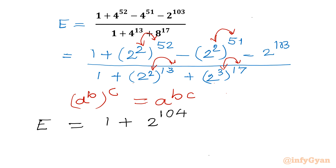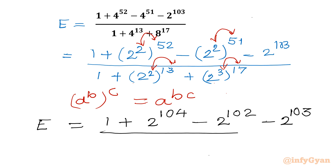Continuing: minus 2 raised to the power 2 times 51, which is 102, minus 2 raised to the power 103, over 1 plus 2 raised to the power 2 times 13, which is 26, plus 2 raised to the power 3 times 17, which is 51.